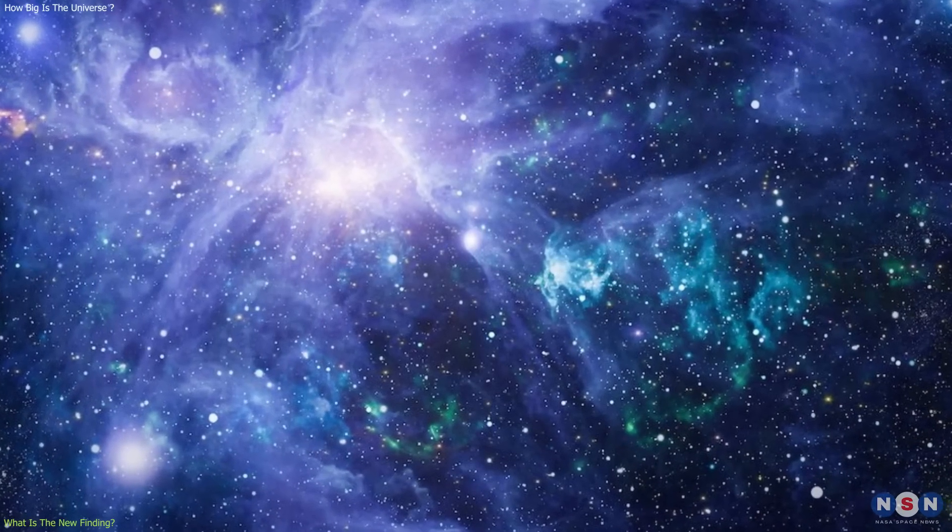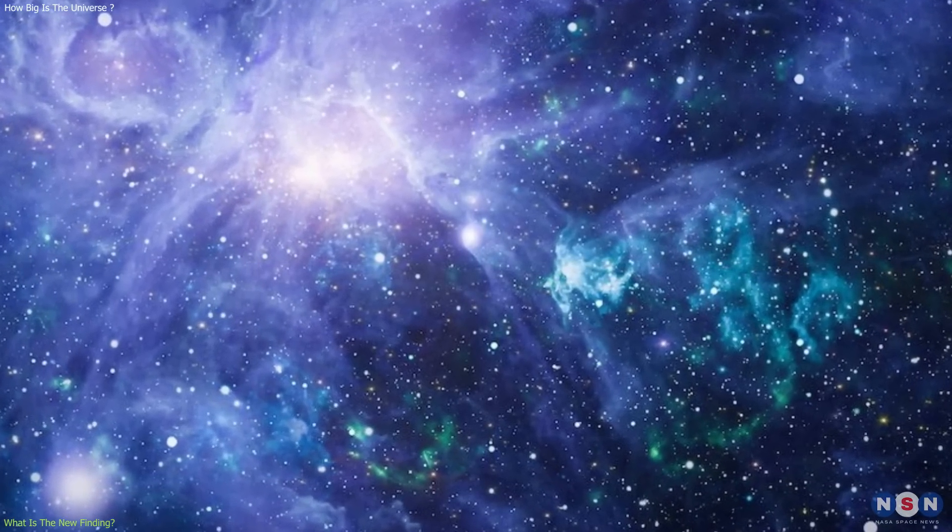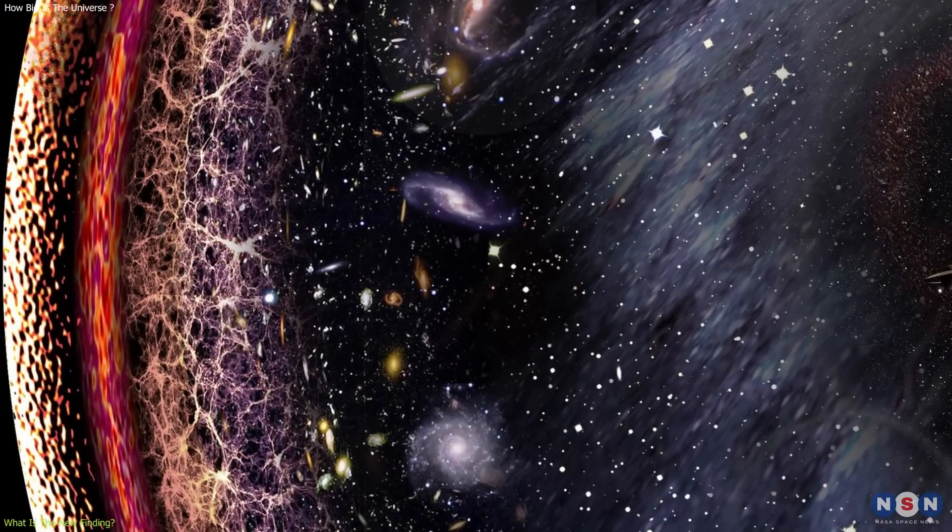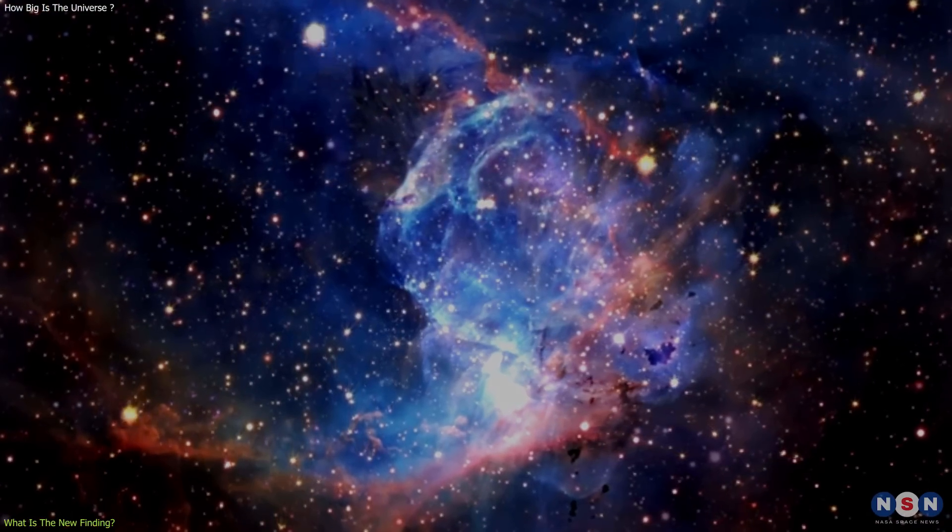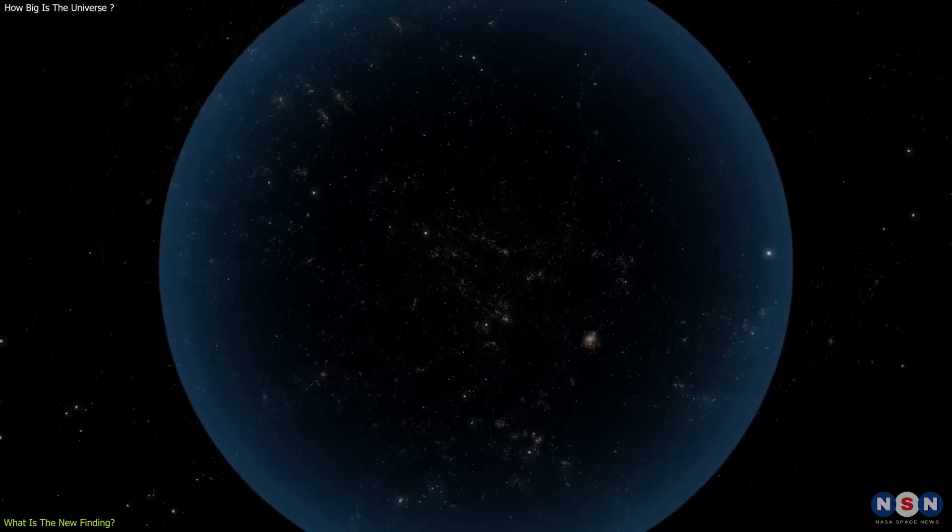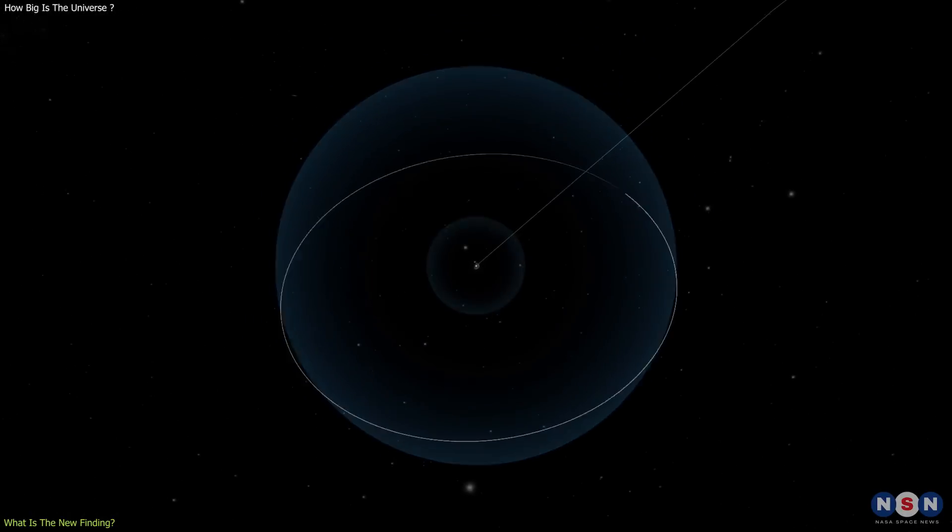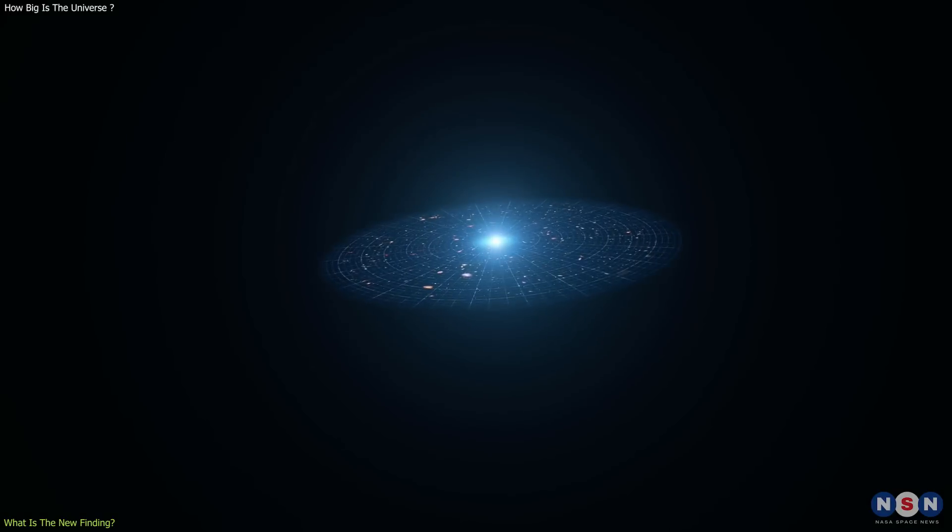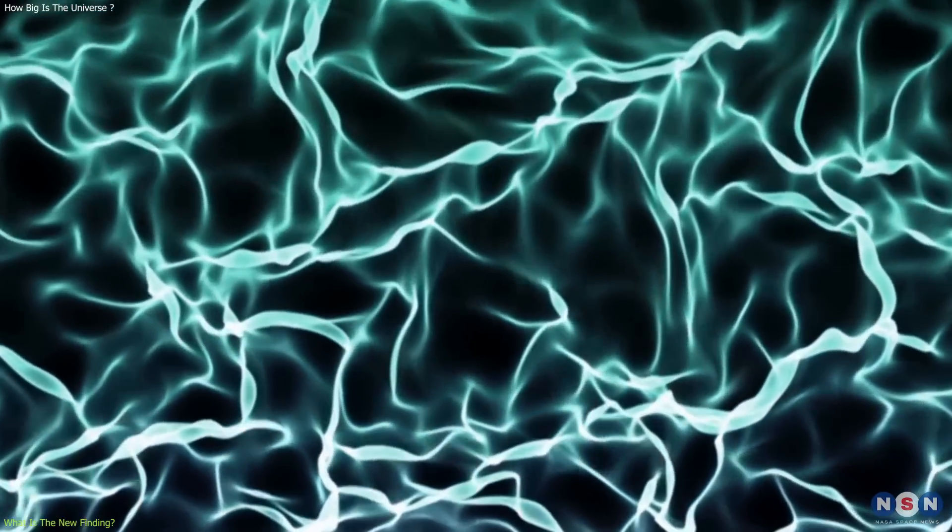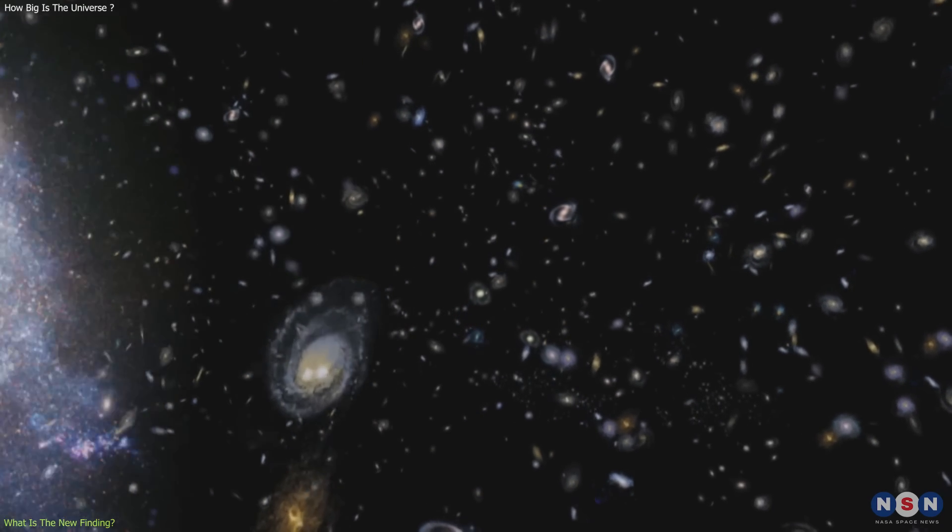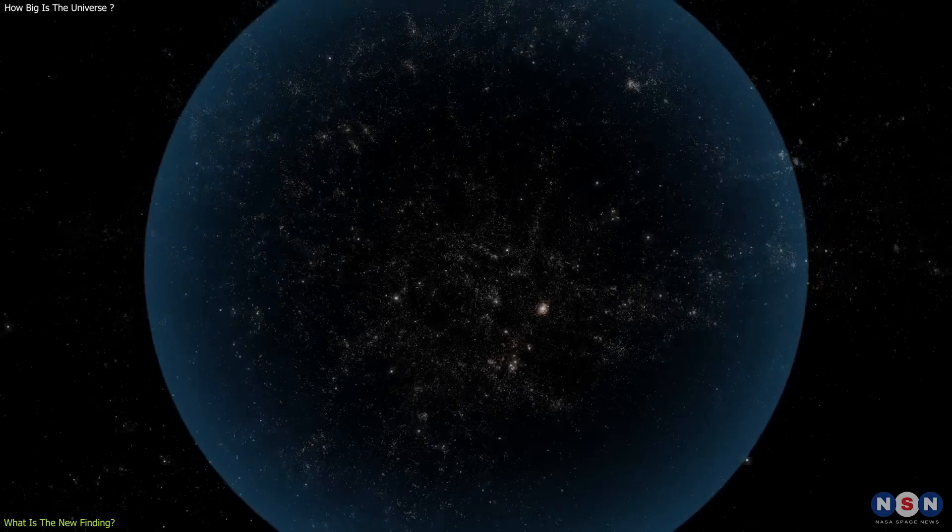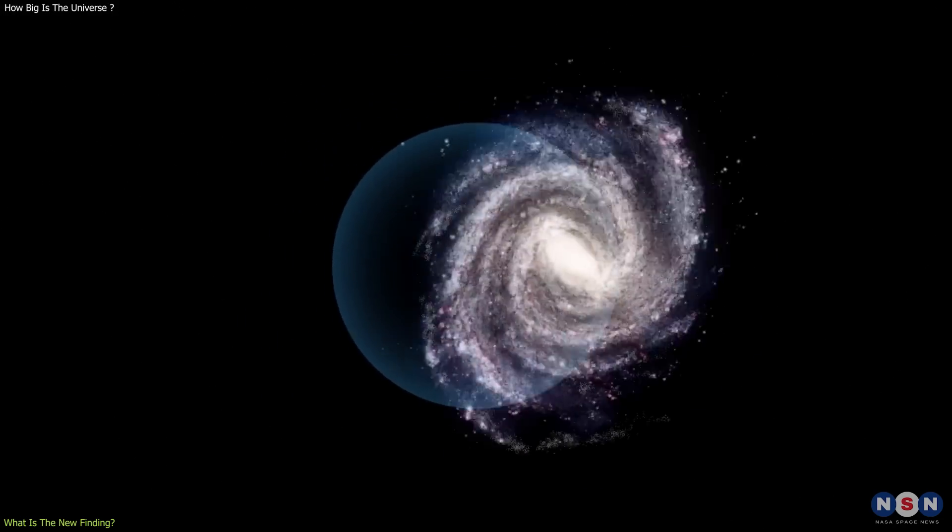Well, it means that there are some parts of the universe that we will never be able to see, even if we wait for an infinite amount of time. These parts are beyond the particle horizon, and they are forever hidden from our view. It also means that there are some parts of the universe that we can see now, but we will not be able to see in the future, because they will cross the particle horizon and disappear from our sight. This is because the universe is not only expanding, but also accelerating, due to a mysterious force called dark energy, which makes the space between galaxies stretch faster and faster. This acceleration will eventually make the observable universe shrink, and we will see less and less of the cosmos as time goes by.